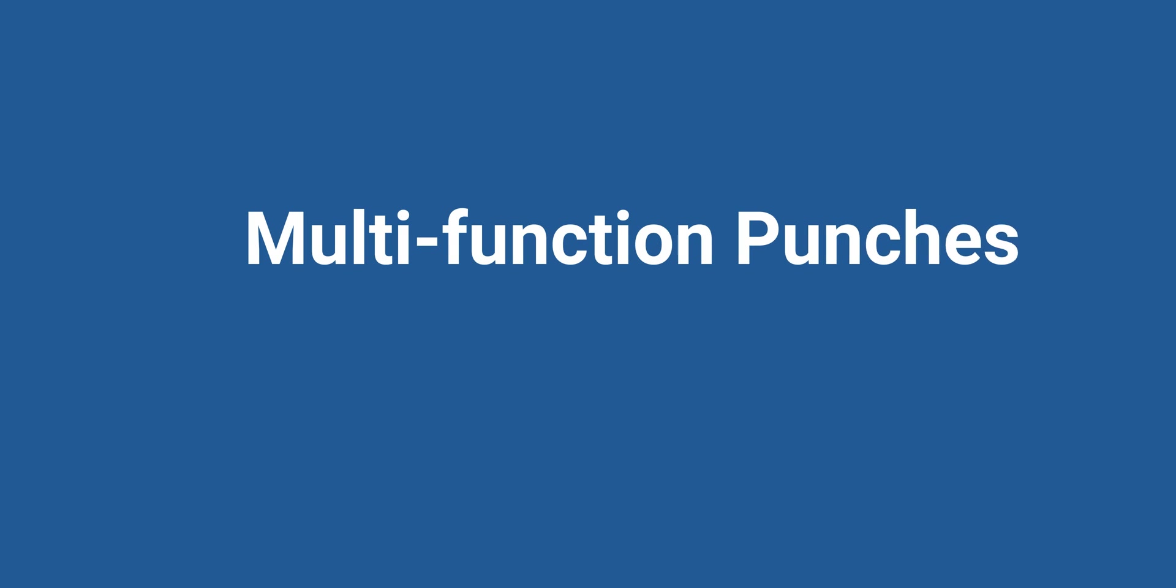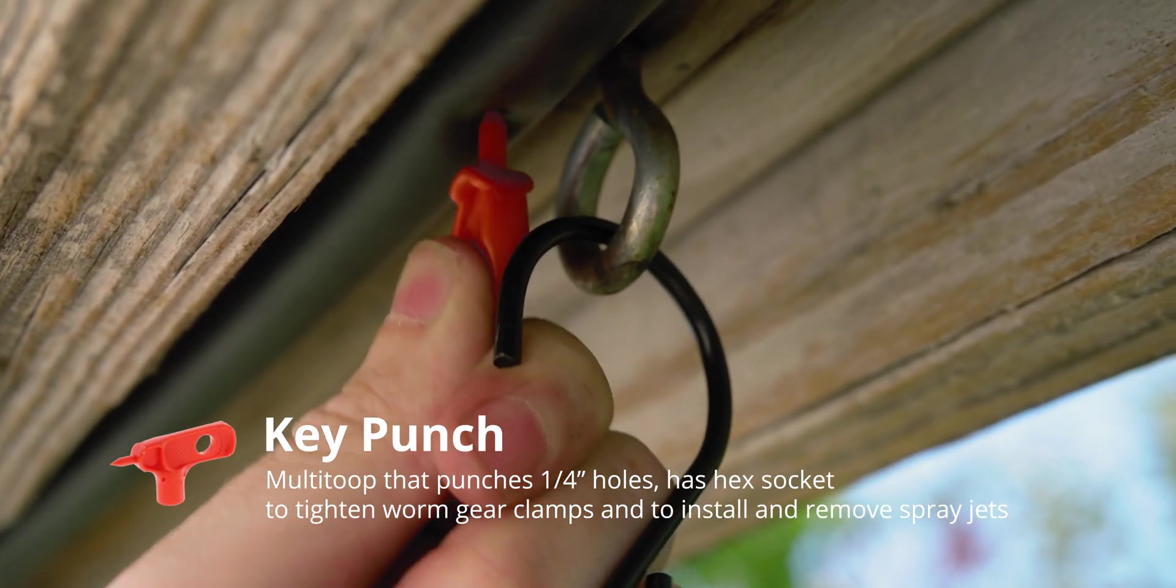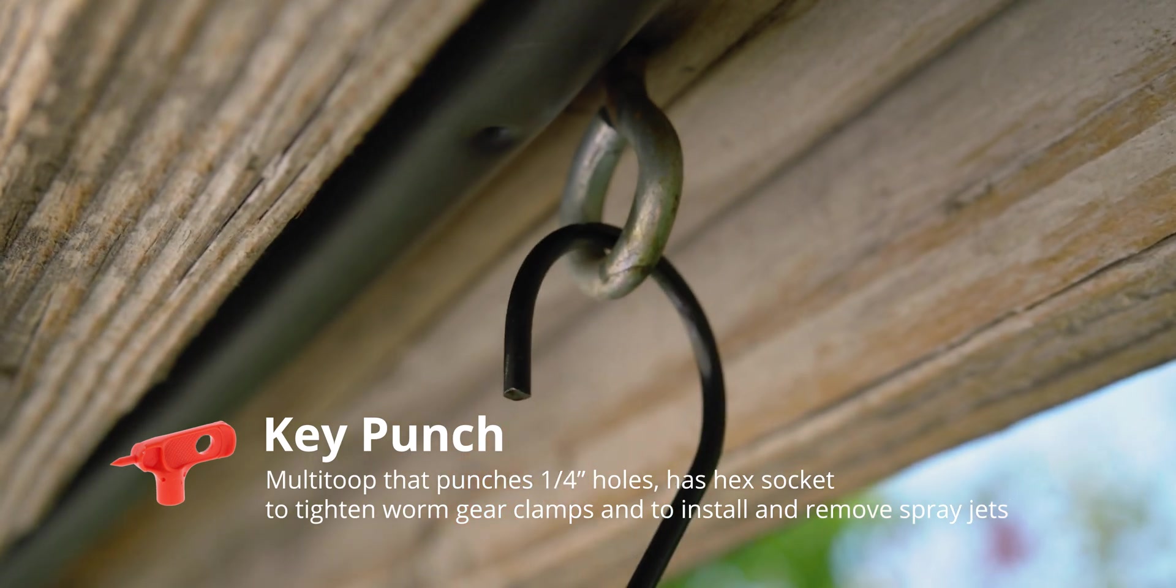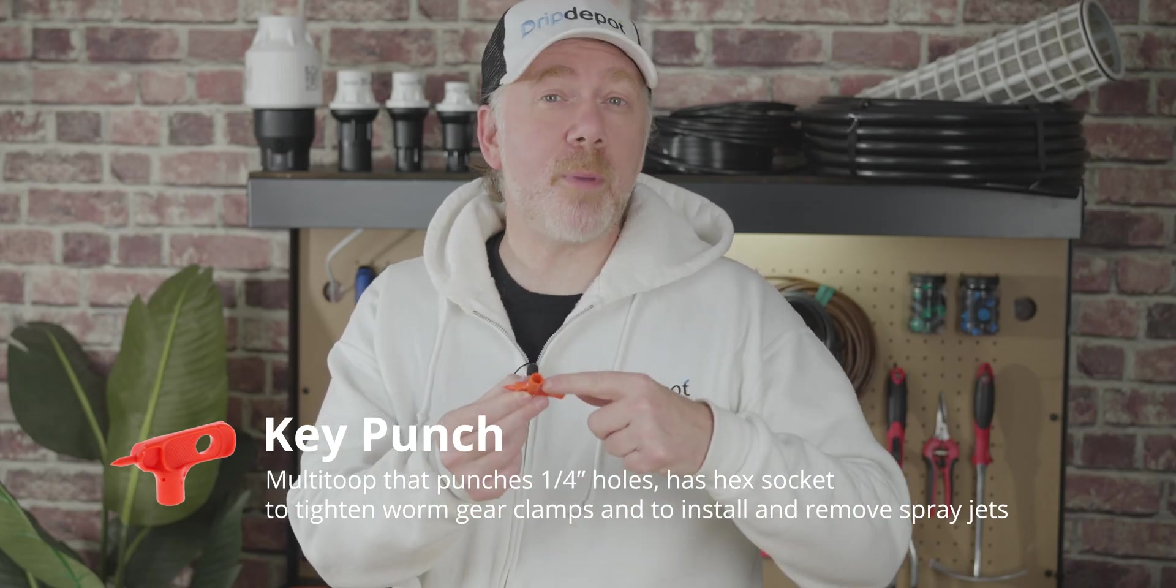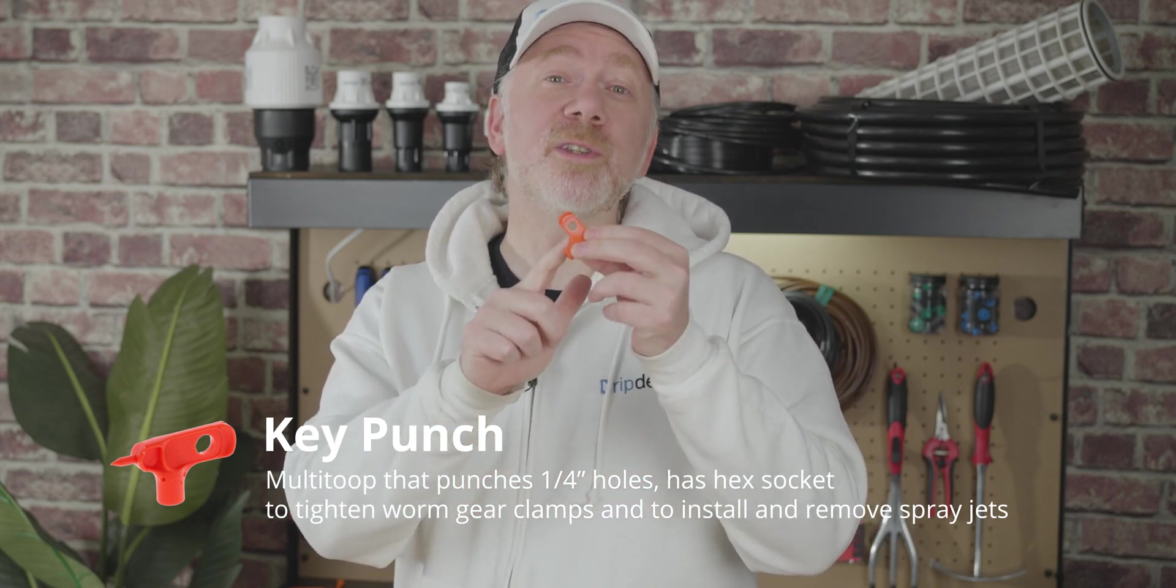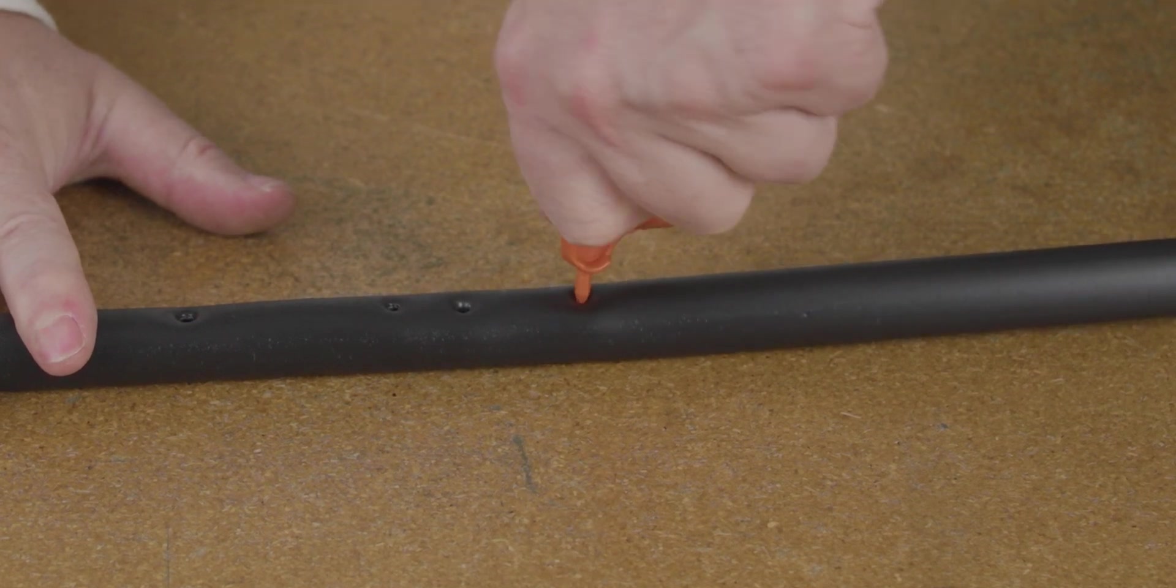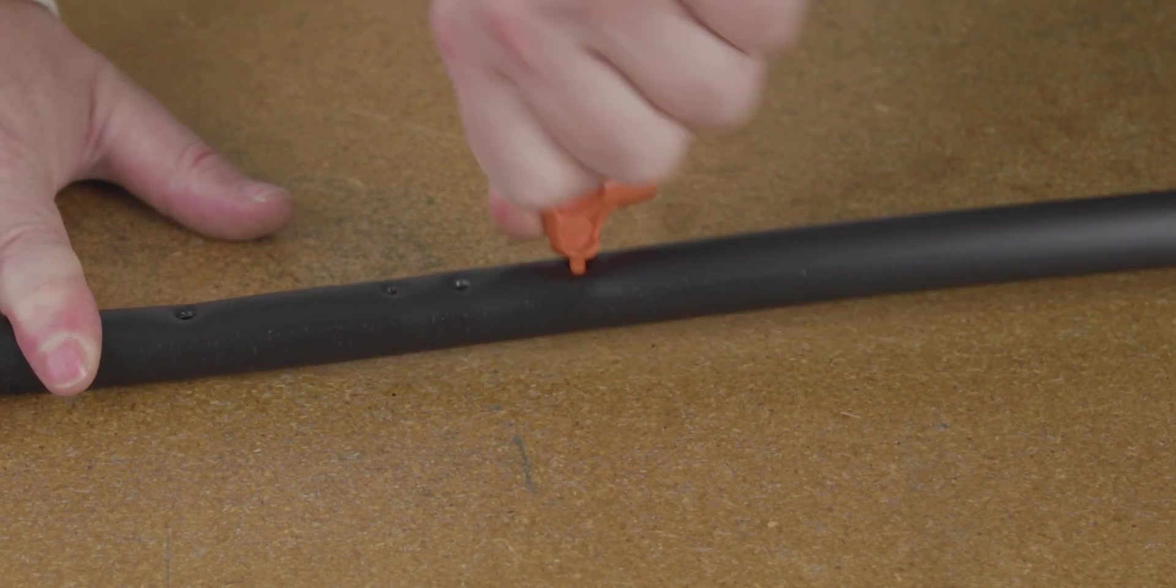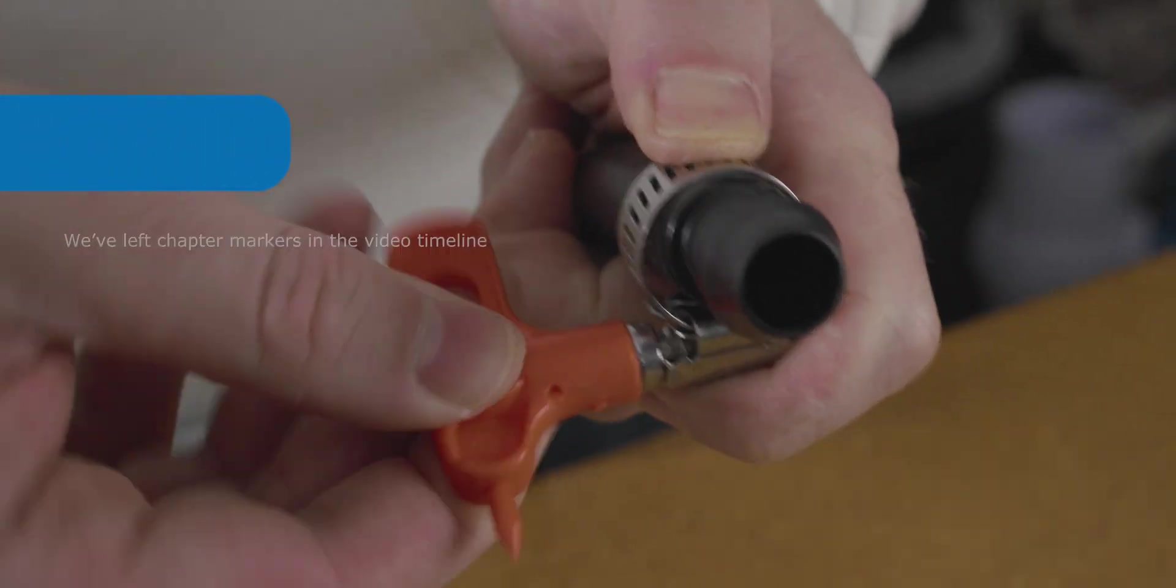Now, let's take a look at a couple of our multi-function punches and tools, starting with our most economical punch. This is the key punch, the most inexpensive punch we have. Yet despite that, it can do three functions: a one-quarter inch punch, a socket at the bottom, so you can tighten steel worm gear clamps, and a little hole that assists with the insertion of drippers. This simple key punch is surprisingly one of the most versatile punches available. This punch goes way beyond its small price tag. We find it comes in handy even if you're using other punches.